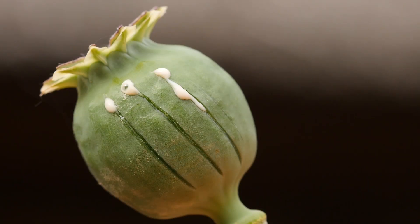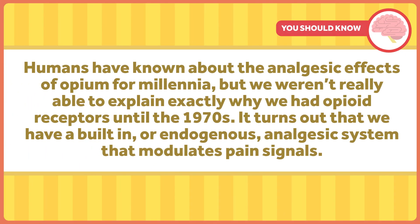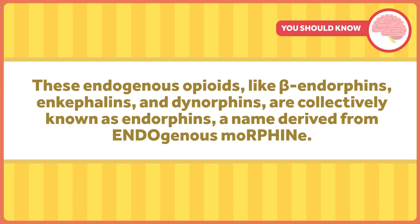But why do our nerves have receptors that respond to a compound that diminishes pain? It doesn't make sense that mammals would evolve a specific receptor for the sap of the poppy flower. Humans have known about the analgesic effects of opium for millennia, but we wouldn't be able to explain why we had opioid receptors until the 1970s. It turns out we have a built-in, or endogenous, analgesic system that modulates pain signals. These endogenous opioids — like beta-endorphins, enkephalins, and dynorphins — are collectively known as endorphins, a name derived from "endogenous morphine."